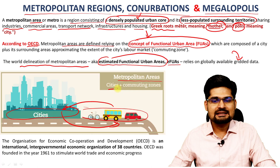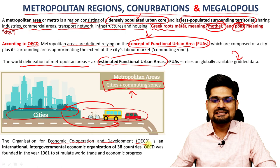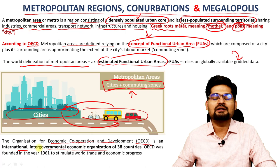Cities plus commuting zone together can be understood as a metropolitan region. The OECD — Organisation for Economic Cooperation and Development — is an international intergovernmental economic organisation of 38 countries, and this definition of metropolitan area is given by them.